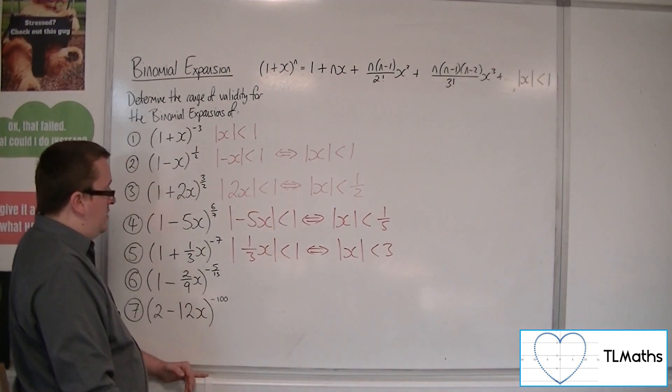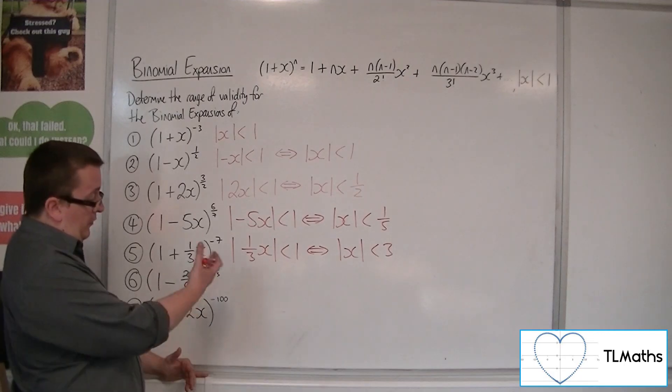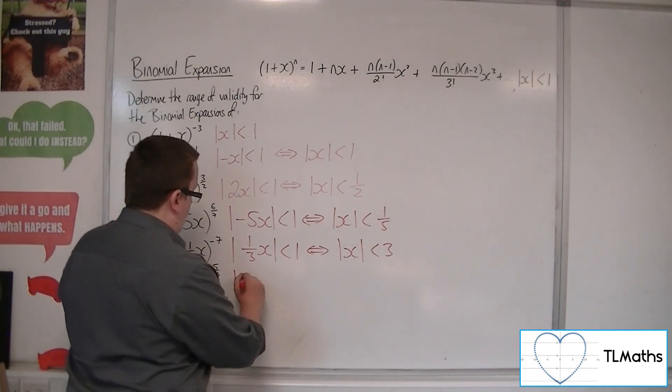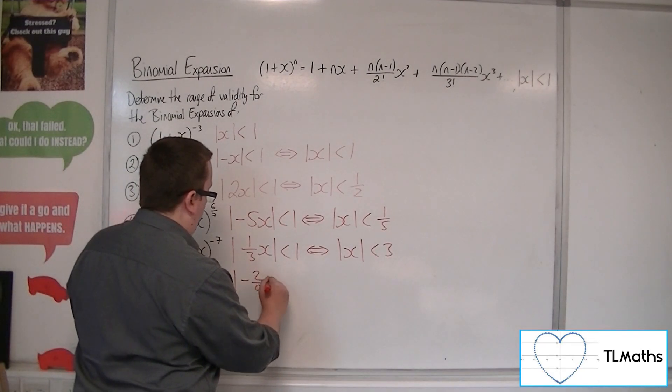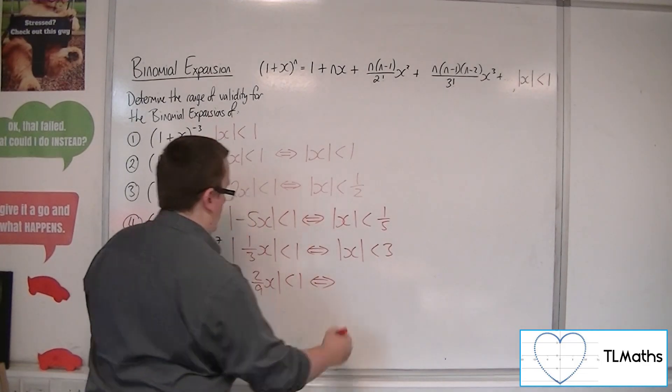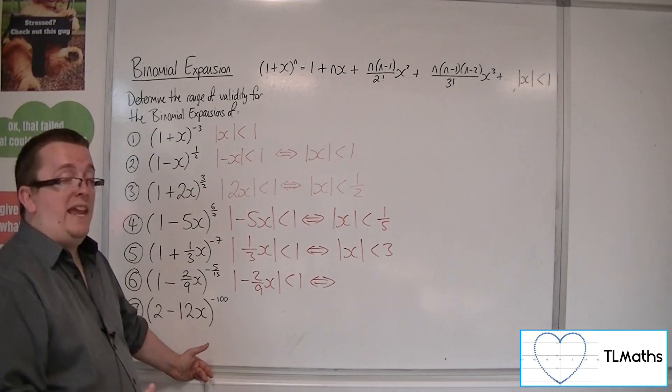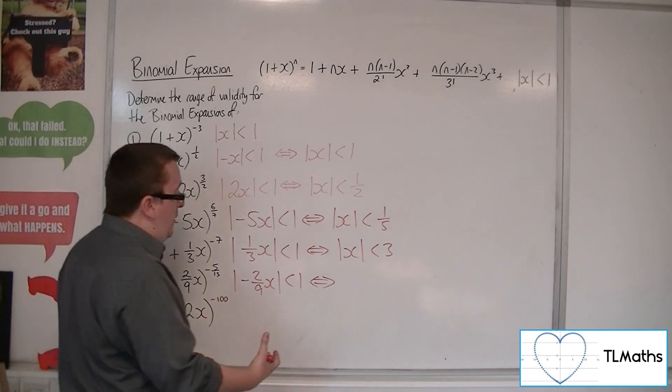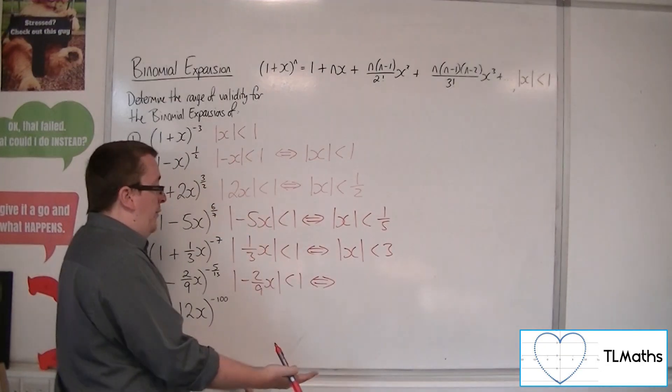(1 - (2/9)x)^(-5/13). So replace the x with -(2/9)x. The modulus sign takes care of the minus. Divide both sides by 2/9, so multiply both sides by 9/2.